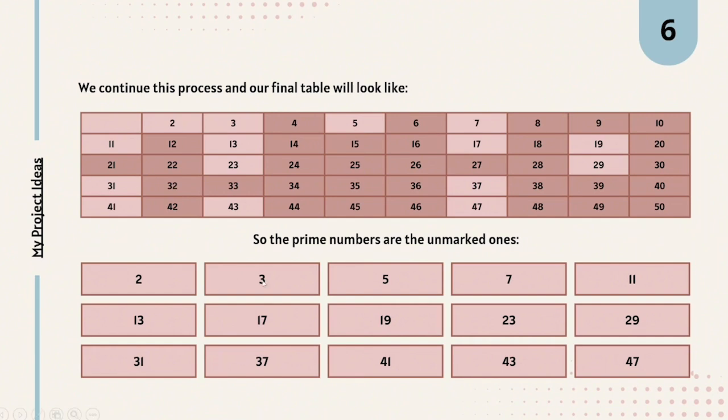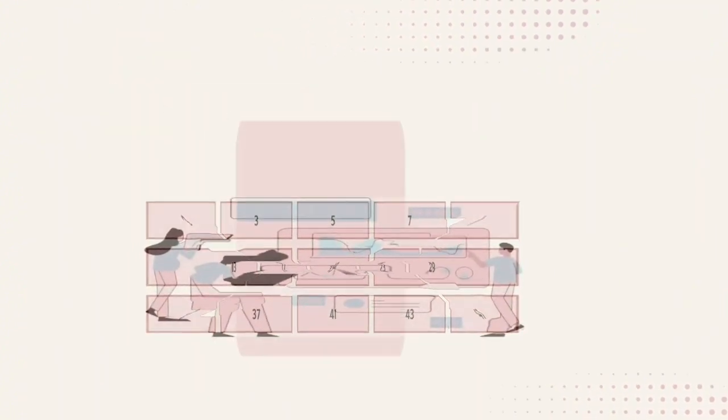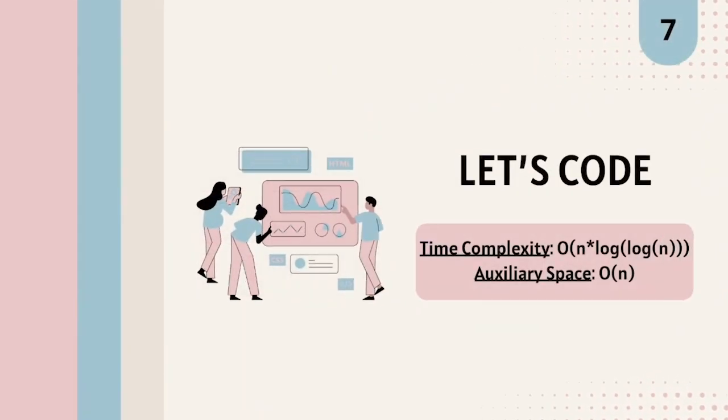So now I hope you understood how does this method look like and how does it work. Now important question. What is the time complexity? The time complexity is gonna be big O of n times log of log of n. And auxiliary space will be big O of n because you're gonna create a table for each number and you're gonna mark out the multiples of that. So auxiliary space is big O of n.